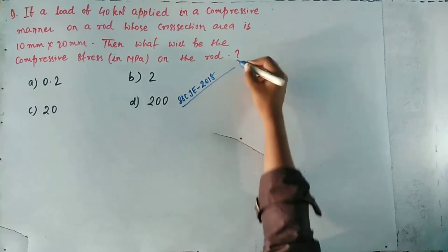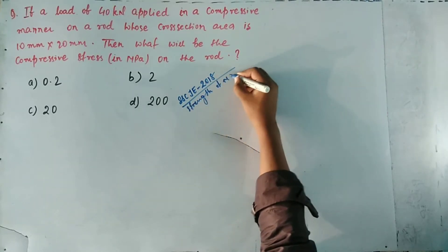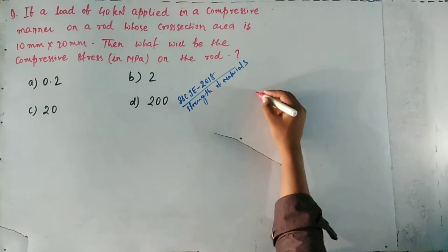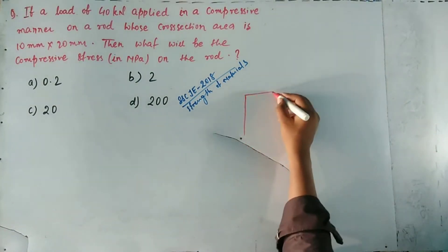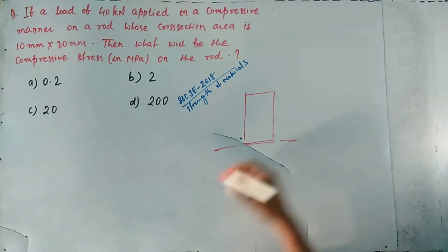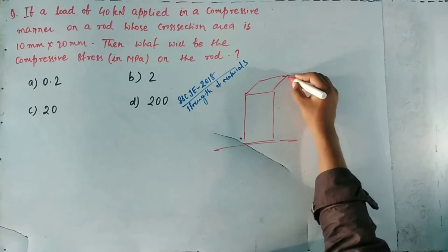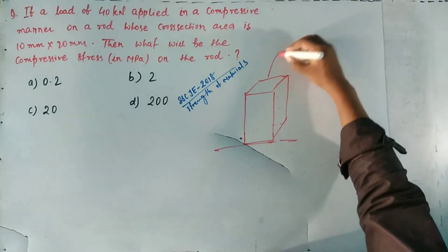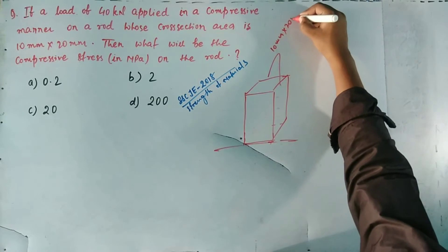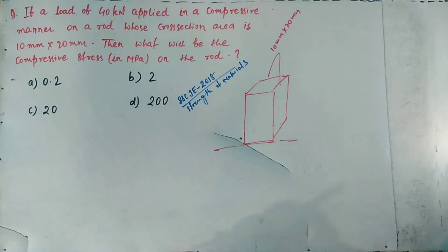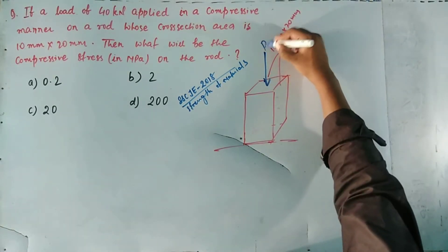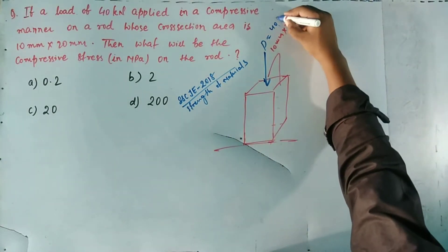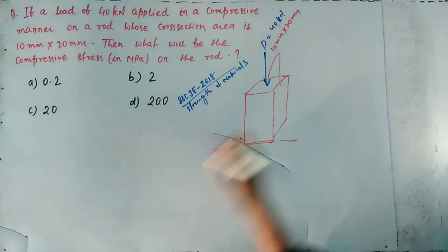This question is asked in SSC JE 2018, which is from Strength of Materials. According to the question, one rod has a cross-section area of 10 mm by 20 mm, and a 40 kN load is applied on the rod. Looking at the diagram, the cross-section area is 10 mm by 20 mm and the load applied is 40 kN, which is a compressive load.